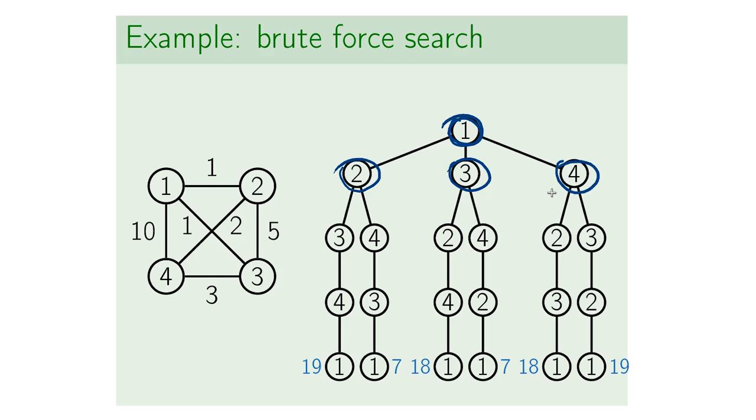From vertex two, we are allowed to go either to vertex three or to vertex four. We are not allowed to go back to vertex one because we need a cycle that visits each vertex exactly once.